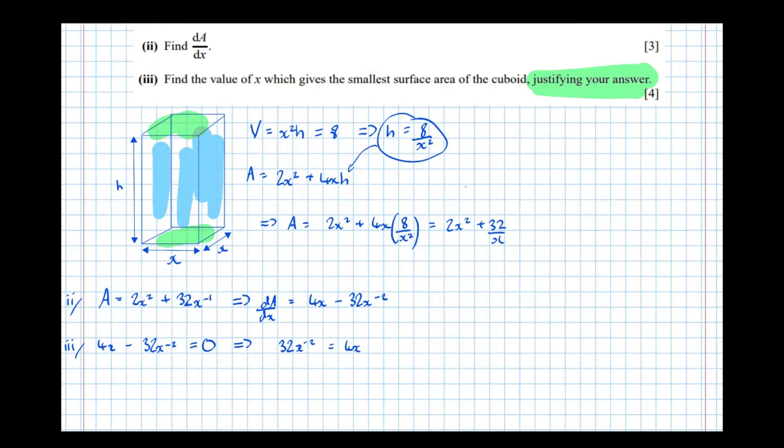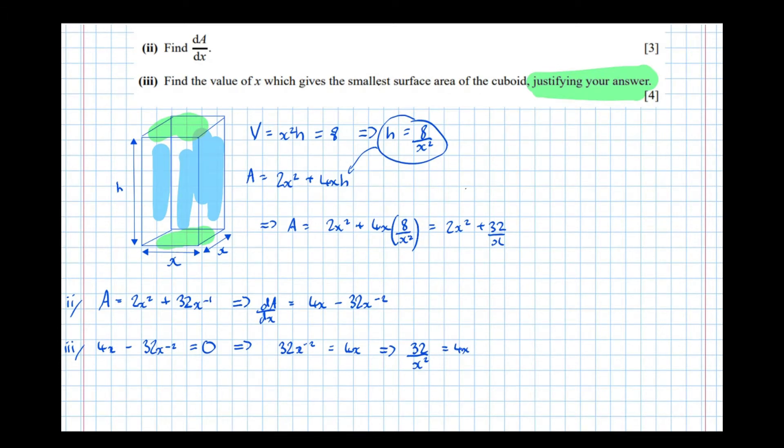And at this point, I think to myself, I really don't like the look of that equation. Solving things with negative indices isn't good. So let's write what it actually means: 32 over x squared equals 4x, which then means that 32 equals 4x cubed, which then implies that 8 equals x cubed, which implies x equals 2.